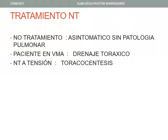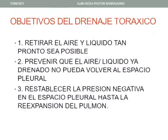El tratamiento del neumotórax asintomático sin patología pulmonar puede ser la no intervención. En pacientes con ventilación mecánica se debe realizar un drenaje torácico y en el neumotórax a tensión se debe hacer una toracocentesis de emergencia. El objetivo del drenaje torácico es retirar el aire y el líquido tan pronto como sea posible, prevenir que el aire ya drenado no vuelva al espacio pleural y restablecer la presión negativa en el espacio pleural hasta la reexpansión del pulmón.